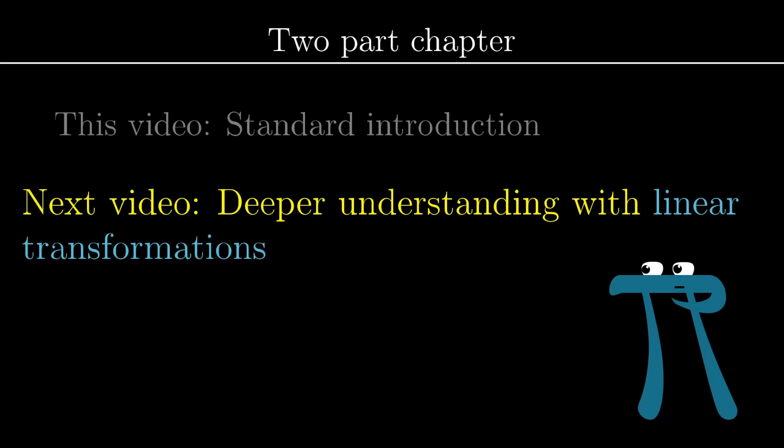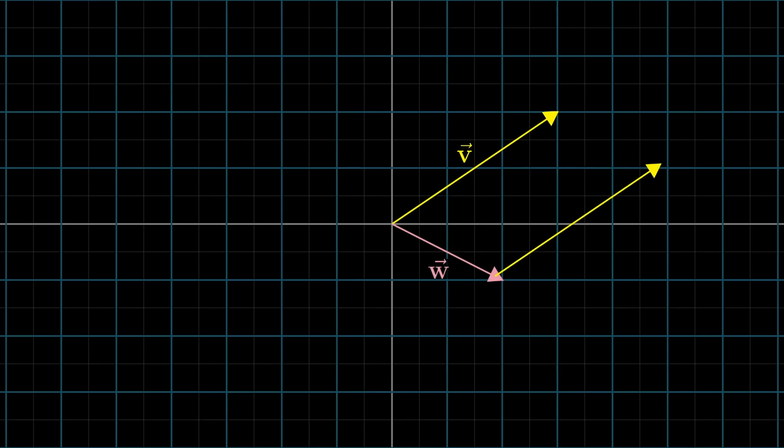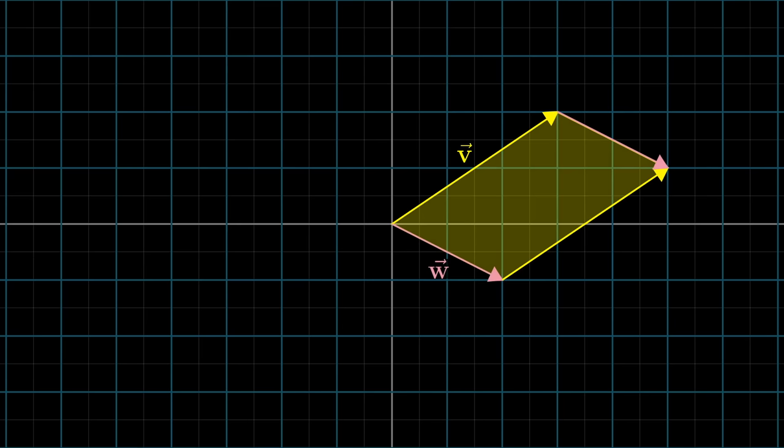We'll start in two dimensions. If you have two vectors, v and w, think about the parallelogram that they span out. What I mean by that is if you take a copy of v and move its tail to the tip of w, and you take a copy of w and move its tail to the tip of v, the four vectors now on the screen enclose a certain parallelogram.